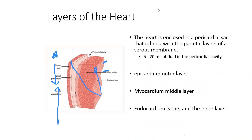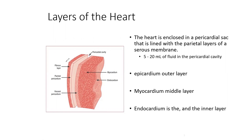Let's look at the layers of the heart. The heart is enclosed in a pericardial sac — a thin layer that the heart is enclosed in. Within that sac there are multiple layers. We have the fibrous layer, we have the parietal pericardium, and then we have the visceral pericardium.